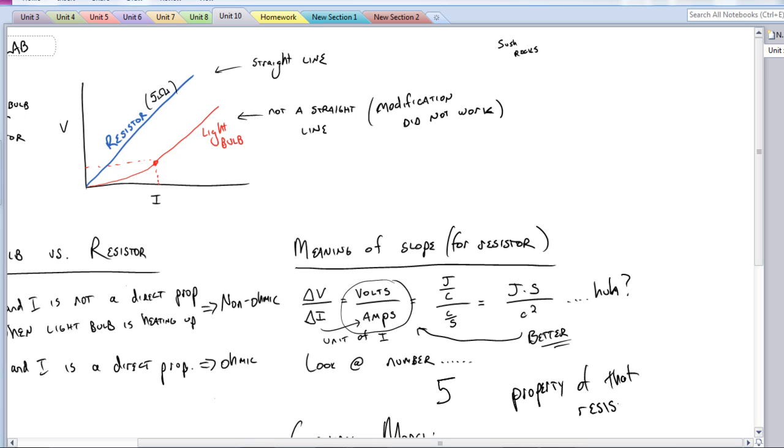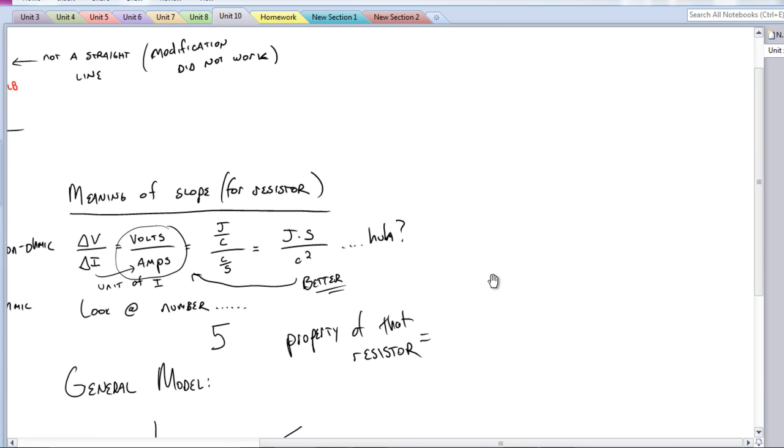And if that's written on the resistor, that's actually what we are going to call the property of that resistor. You would have noticed the light bulb would have had a different slope, which is, again, another property of that.